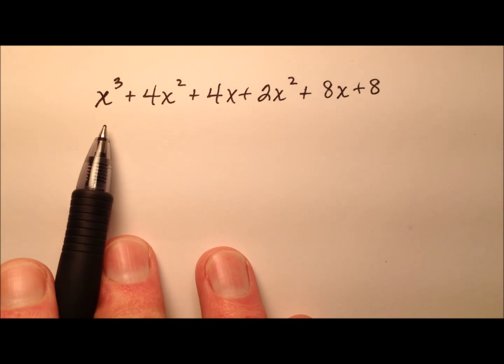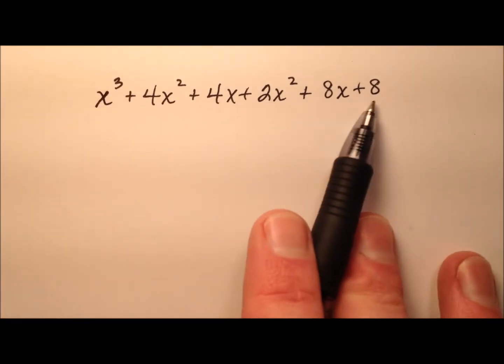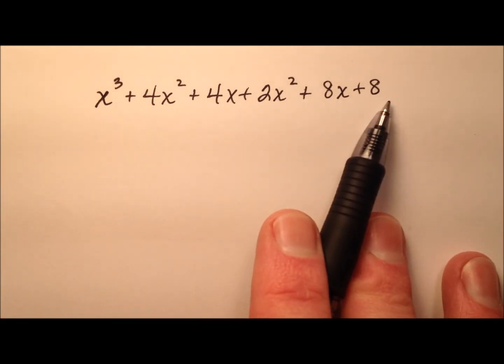So the first thing I always look for is if there's a greatest common factor. And it looks like the first term is all x's and the last term has no x's, so there will not be a greatest common factor.